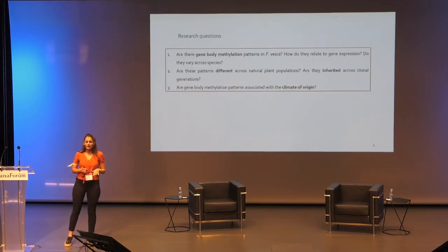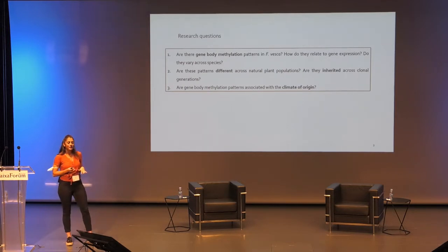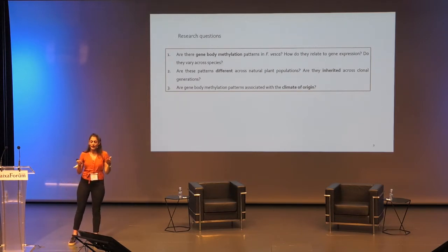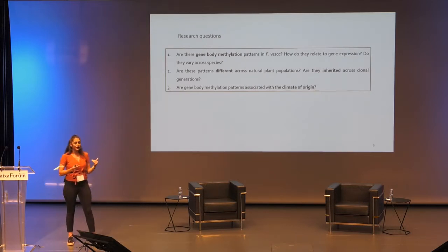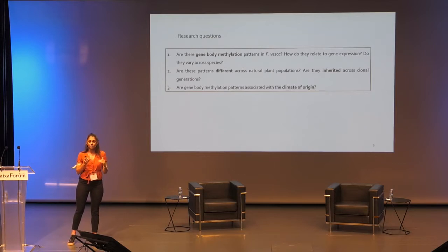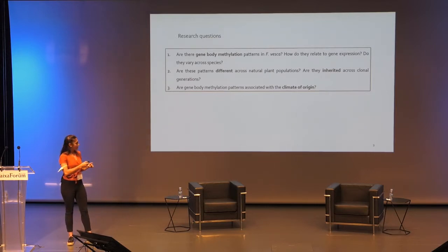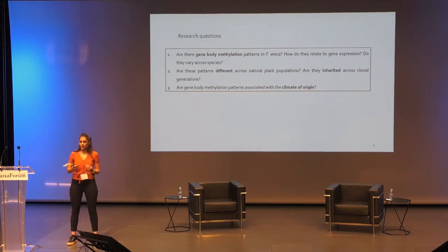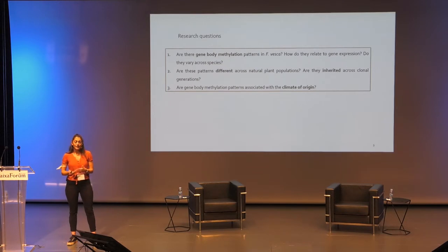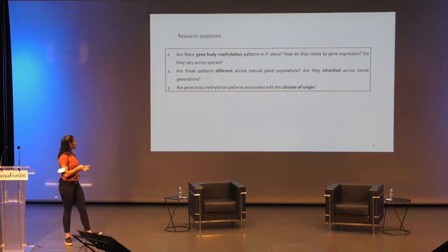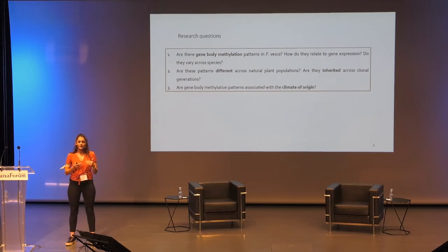So what we are asking today is whether in the wild strawberry we actually have different gene-body methylation patterns and how these are associated with gene expression, and also a comparison across a few plant species. The second question is whether these patterns vary across natural populations and whether they are inherited across clonal generations. And the last question is whether these gene-body methylation patterns can be associated with some climatic variables of origin of these populations.